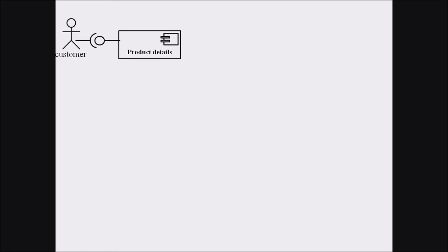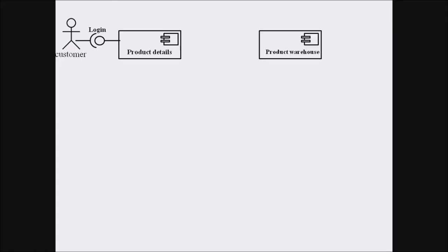The product component is interfacing with the customer. The product component is providing the interface, so a full circle is shown on the side of the product detail component. The customer is requesting this interface, which is why we represent a semicircle. The interface between these two is the login process.